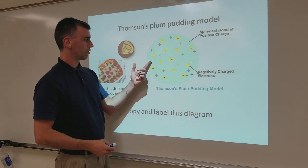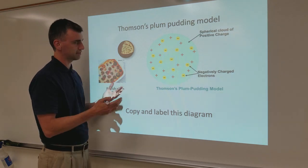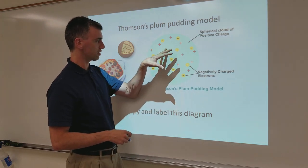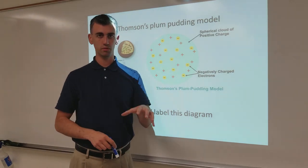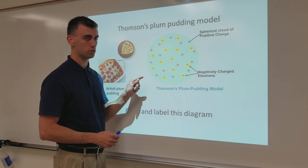But he had to take that a step further. Why is it called the plum pudding model? Well, aside from looking like that, what's this other stuff? The pudding, or like the bread part of it. He said, well, if there's negatively charged stuff, we know it's been proven that atoms are neutral. That means atoms have no charge.